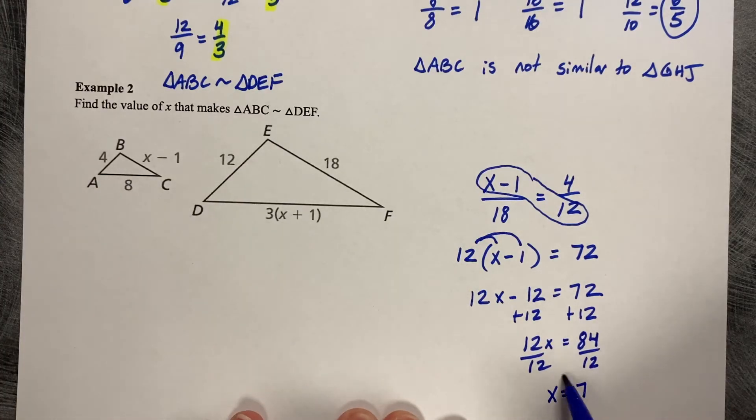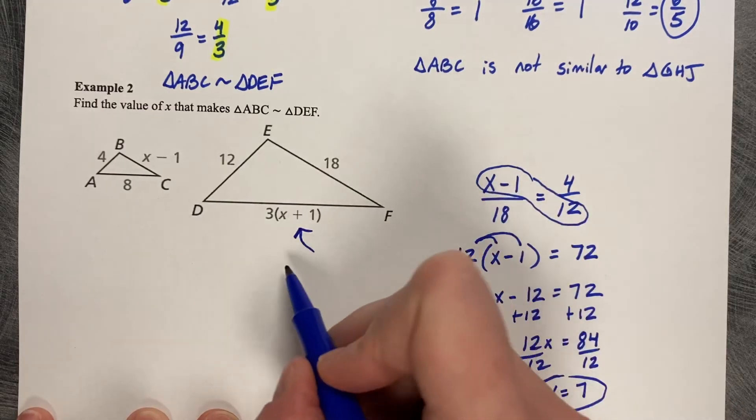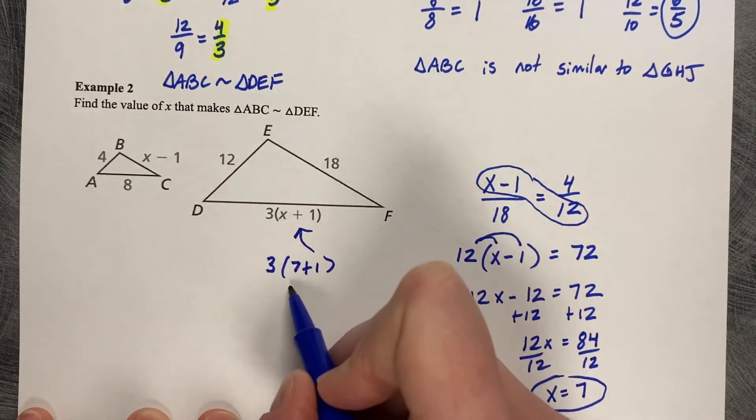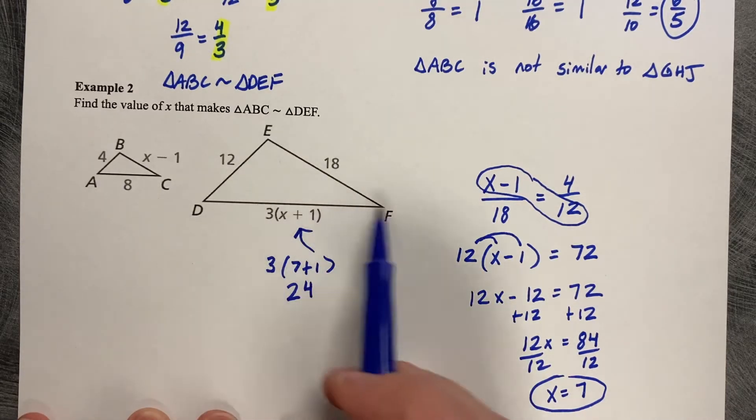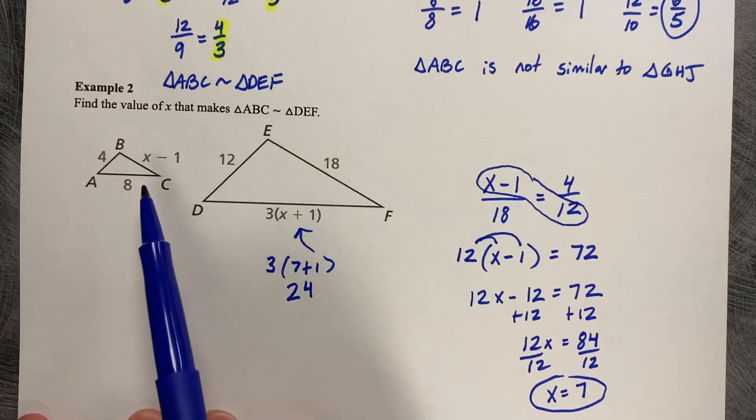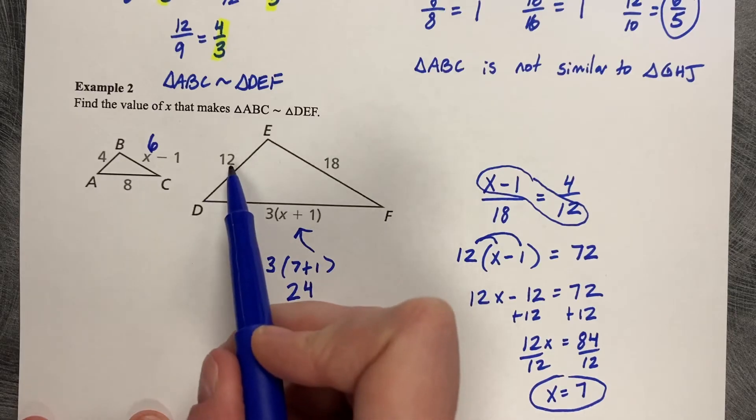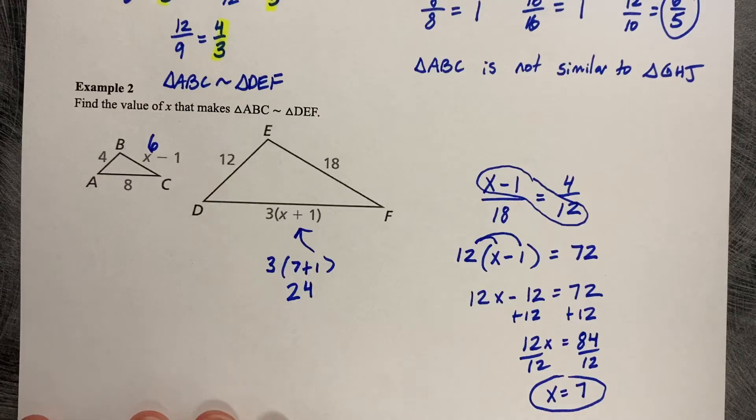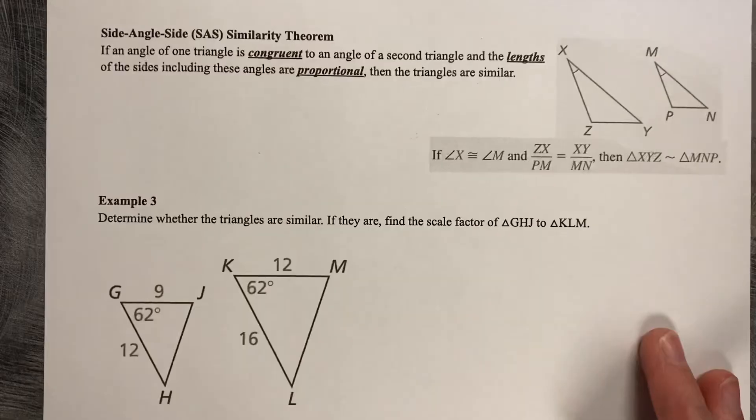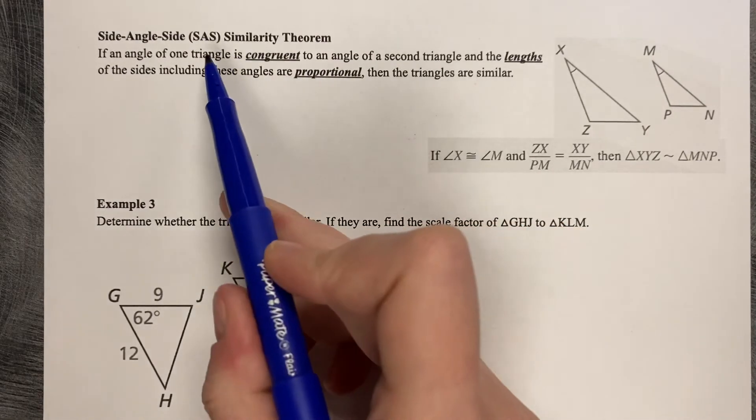So the value of X that makes these proportional is 7. And now I can figure out that this side length is 3 times 7 minus 1, which is going to be 3 times 8, which is going to be 24. So this side length DE, and that makes sense, and then this would be 6. This side length would be 6. So 4 times 3 is 12, 6 times 3 is 18, 8 times 3 is 24.